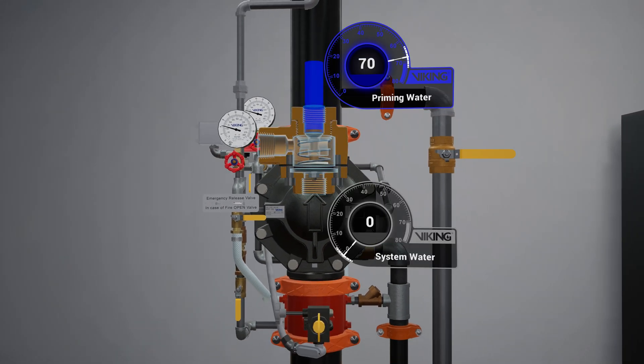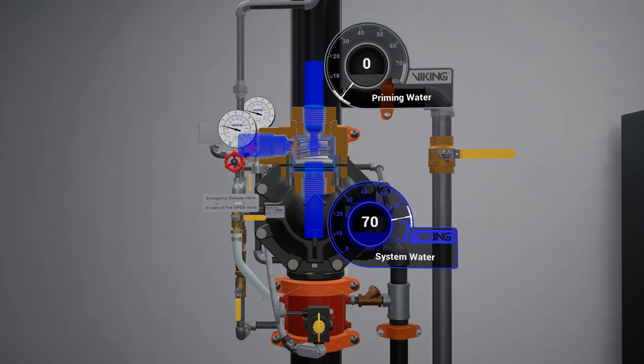When water is directed to the sensing side of the PORV, the push rod is forced open. Priming water is then directed to the open drain, preventing the priming chamber from repressurizing.